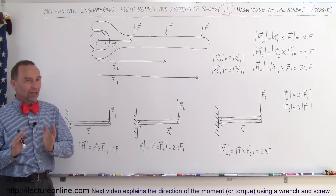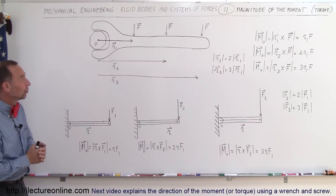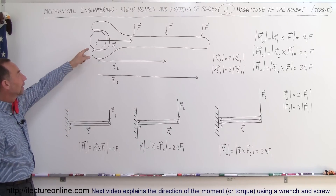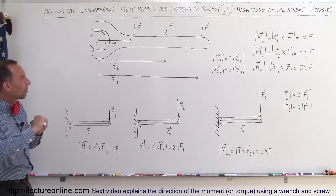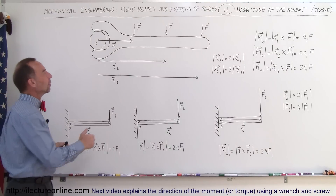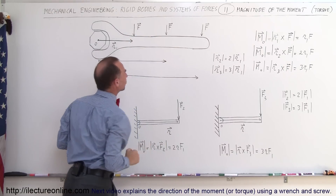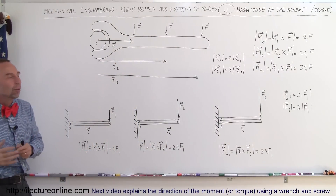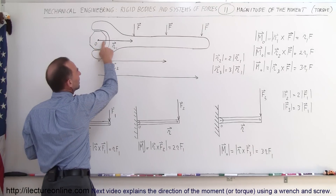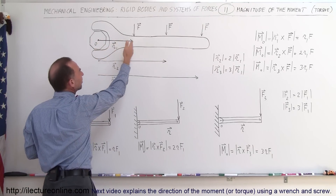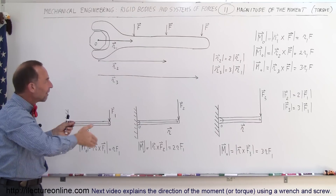Welcome to ElectronLine. Let's talk a little bit more about the magnitude of the moment. Here we have a bolt that can rotate about its central point, and we have a wrench that's trying to tighten the bolt. We're applying a force either at this location, at this location, or at that location, and we want to know what the magnitude of the moment would be in each case. Notice that here is the position vector, which indicates the moment arm — the distance from the point of rotation to the line of action of the force.